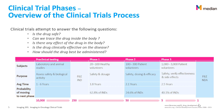Here is an overview of the clinical trial process with clinical trial phases. Clinical trials attempt to answer the following questions: Is the drug safe? Can we trace the drug inside the body? Is there any effect of the drug in the body? Is the drug clinically effective on the disease? How should the drug best be administered? Subjects can be laboratory and animal for studies and testing, healthy volunteers for Phase 1, more volunteers for Phase 2, and 1,000 to 2,000 patient volunteers in Phase 3. The purpose of each phase is different. Preclinical testing is about safety and biological activity. Phase 1 to 3 are about safety, dosage, and efficacy to verify effectiveness and side effects.